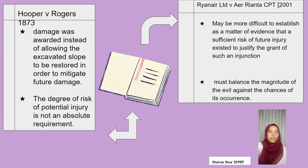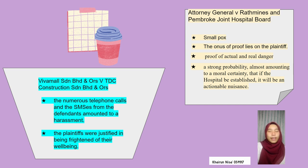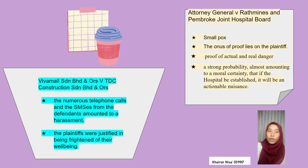In Ryanair Limited v AAR Rianta CPT, it was held that there must be no fair probability of a bona fide defence, and it could be more difficult to prove as a matter of fact that there was a reasonable danger of potential harm. The seriousness of the harm must be weighed against the possibility of its occurring. In Viva Mall Sendirian Berhad v Visus TDC Construction Sendirian Berhad, it was held that numerous telephone calls and SMS messages from the defendant amounted to harassment, and the plaintiffs were justified in fearing for their well-being. In Attorney General v Redmines and Pembroke Joint Hospital Board, if there was inconsistent expert evidence, the judge should not make an opinion himself as an expert, and if left in doubt, he would not be able to conclude the case.